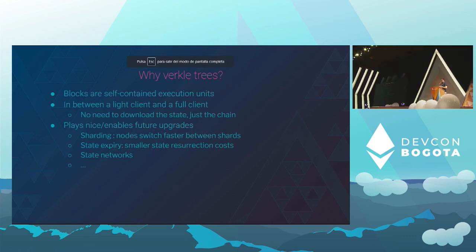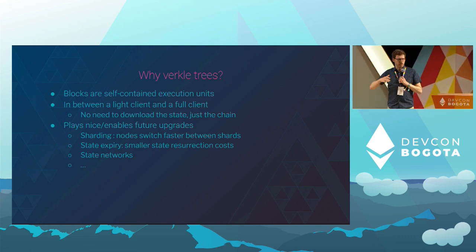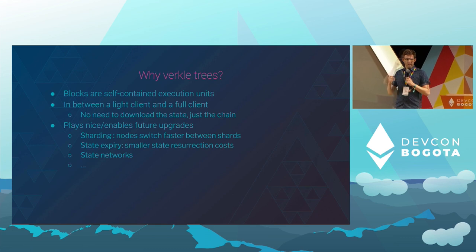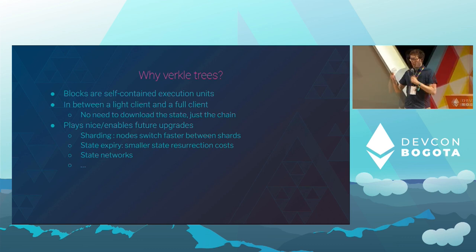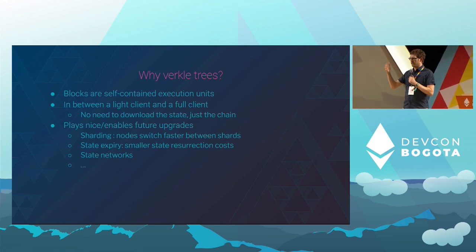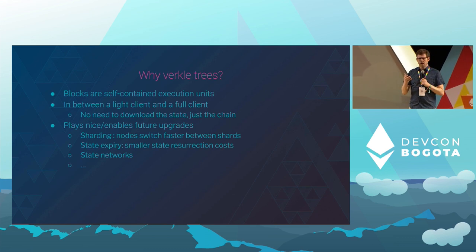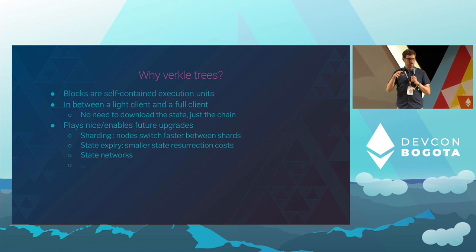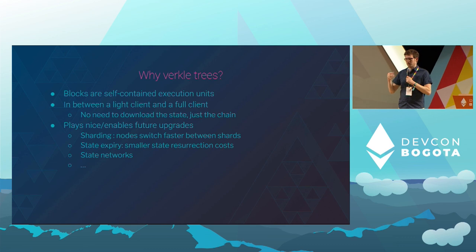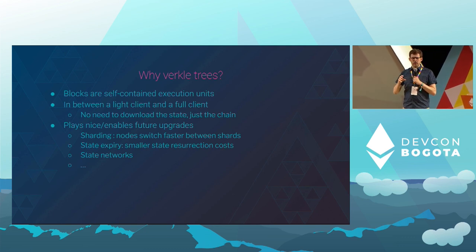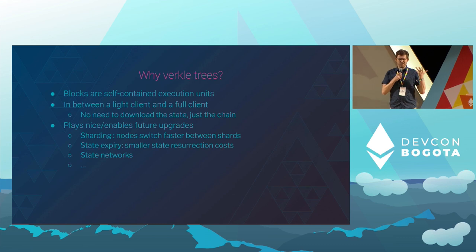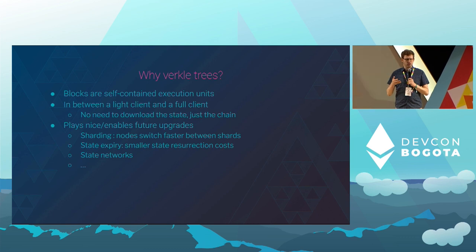Why are we considering Verkle Trees? It's basically a big change in the way Ethereum functions. The first reason is we want to be able to build blocks as self-contained execution units. At the moment, Ethereum has a problem: when you want to join the network, or if you haven't followed the network for a while, you need to go through a sync process. You cannot access the state directly. The idea is that if you include in the block everything that you need, you can just download the block and execute it.